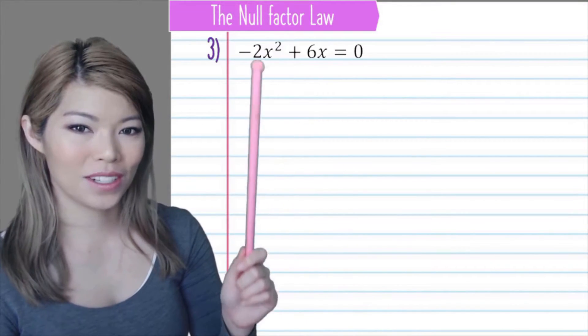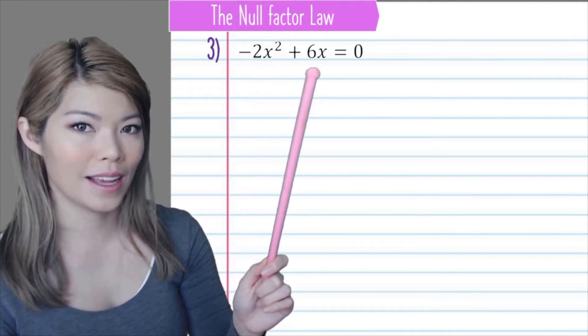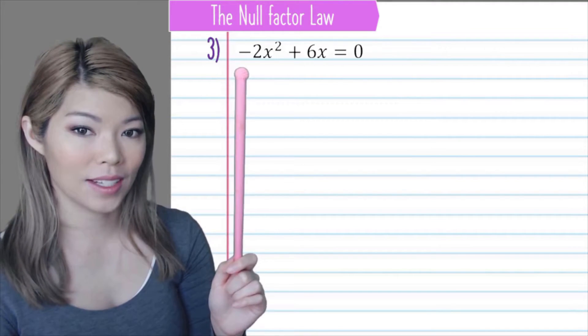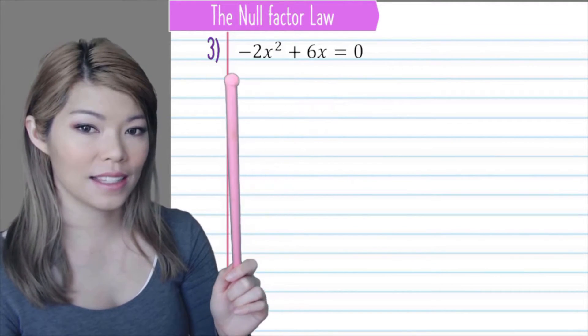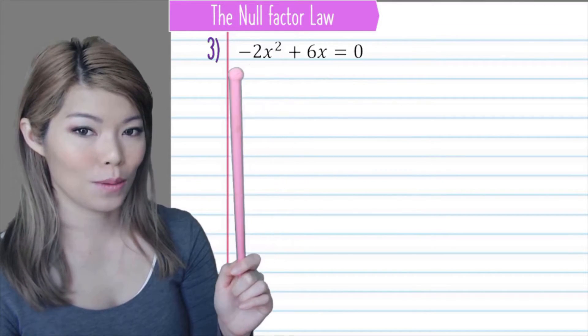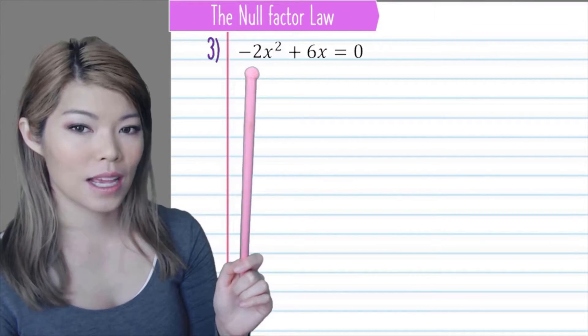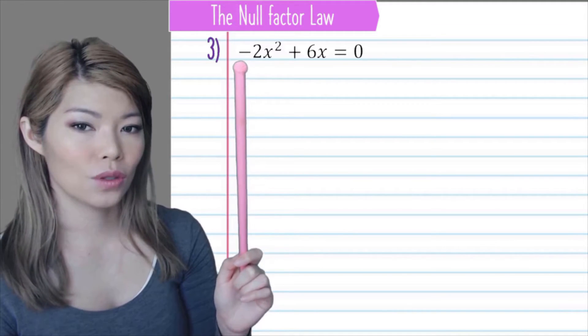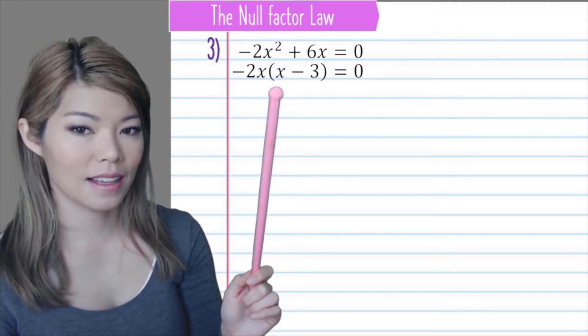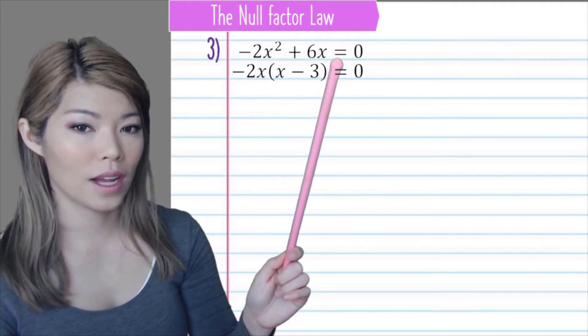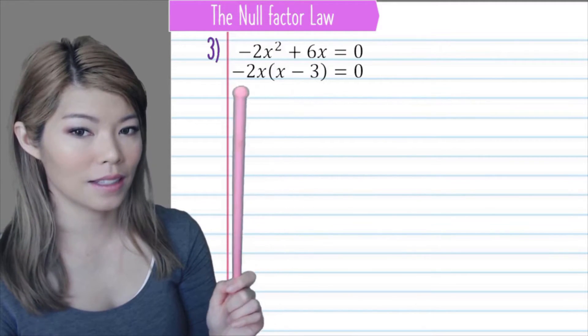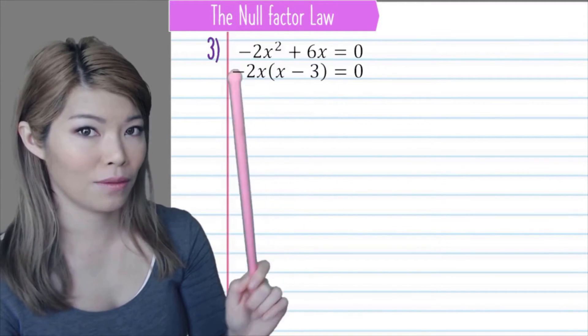Next question. Is this a difference of two squares or do we take a highest common factor out? We take the highest common factor out. And the highest common factor is minus 2 and x. So minus 2x. So when you take minus 2x out, what are you left with? Minus 2x times what is minus 2x squared? That is x. Minus 2x times what is 6x? That is minus 3. Minus times minus is positive. Be very careful with positive and negatives.